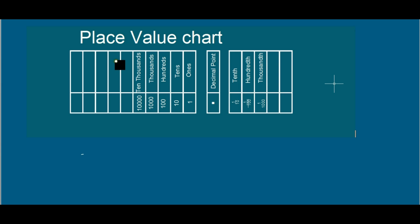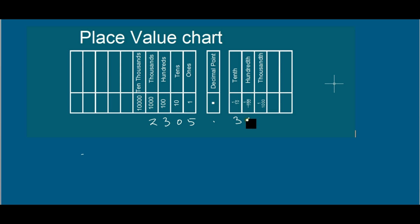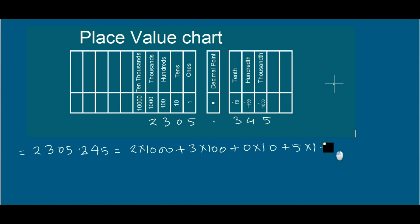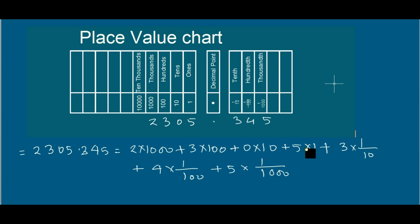This is the complete place value chart — for natural numbers, meaning the whole part, as well as for decimal parts. If I write a number like 2305.345, I will read this number as 2305.345. If I expand this number, I will do it like this.